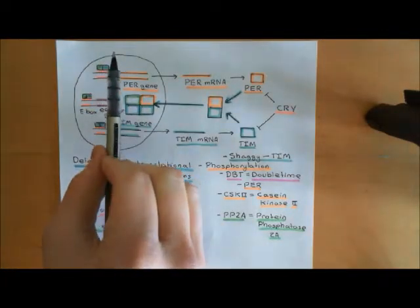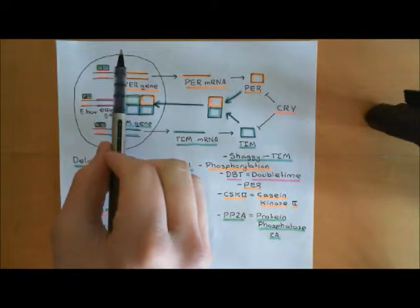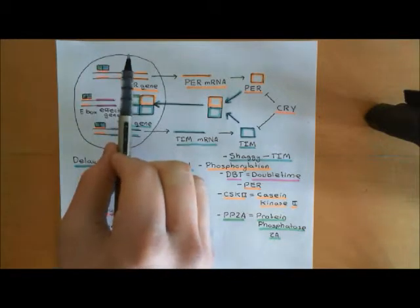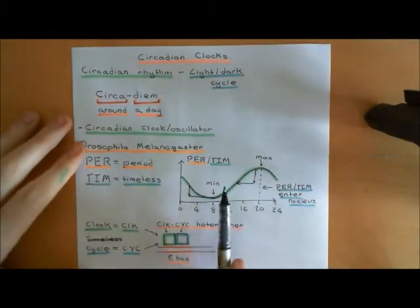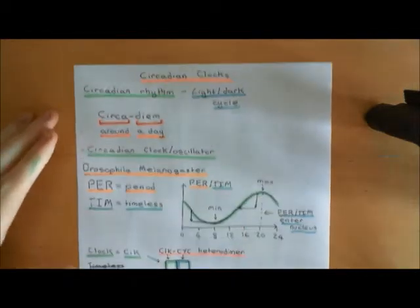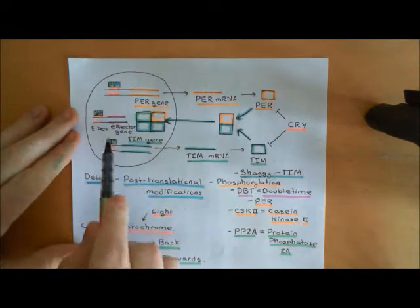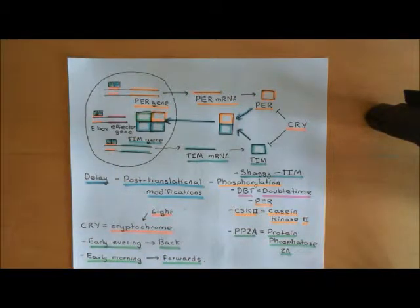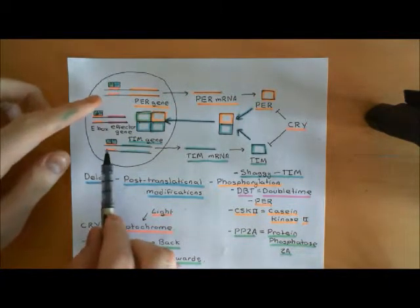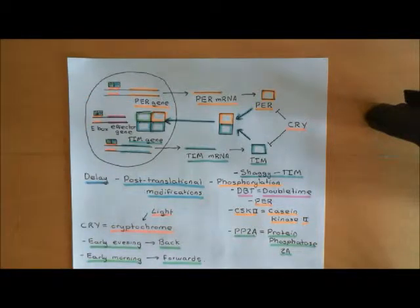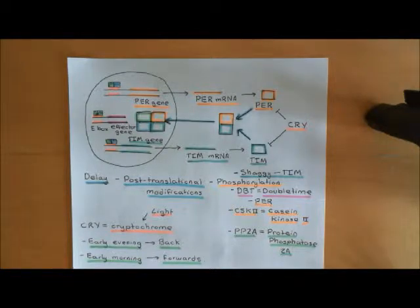Starting at 8am, you're going to have very low levels of period and timeless initially. When you have low levels of period and timeless, the clock-cycle heterodimers are free and active. They are going to bind to the E-boxes in the gene control regions of the period and timeless genes, and they're going to cause the period and timeless levels to go up and up within the cytoplasm.